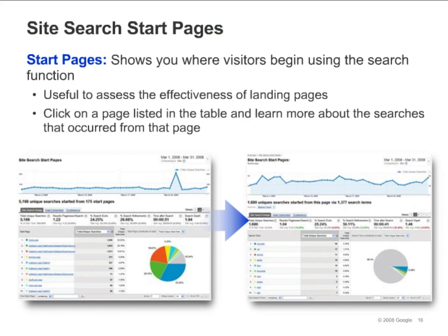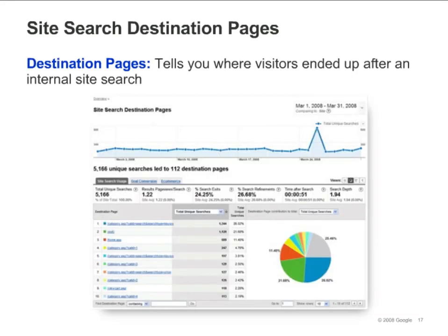You can use this report to find out what visitors are searching for from your landing pages, and you can use the information to improve the page content. For example, if many visitors search on Shipping Options from your shopping cart page, you might want to display shipping information directly on the page. You are also able to see popular destination pages for the search term, as well as additional information on the related search. Click on a page in the table to see the specific search terms that led to the page.